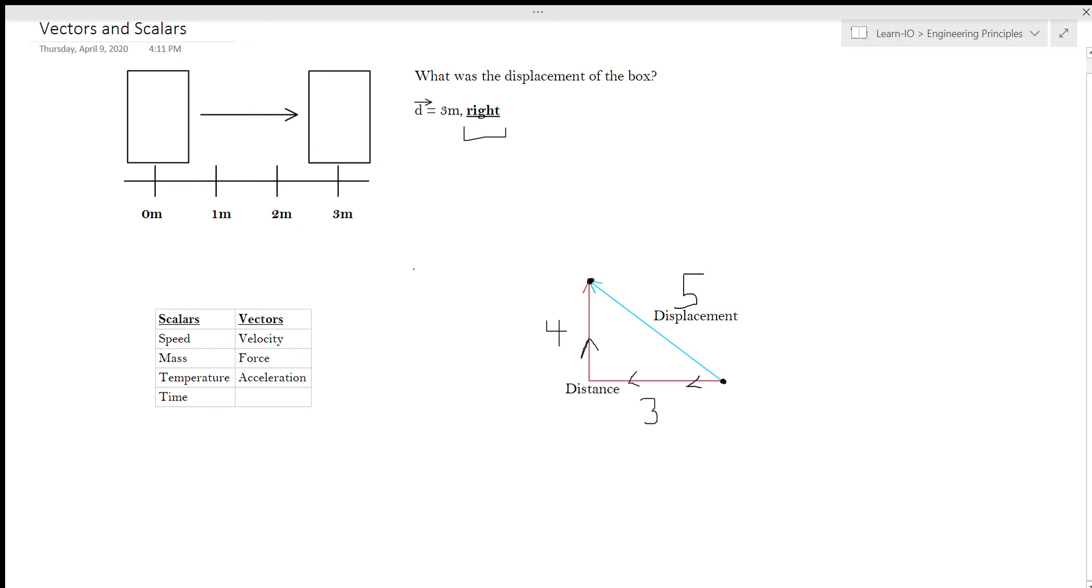And that's just keeping that in mind. Let's look at some other examples just to kind of help understand this a little better. So some common examples of scalars include speed, mass, temperature and time. Whereas some common examples of vectors include velocity, force and acceleration. These are actually values that we're going to be using in the next couple of lessons.